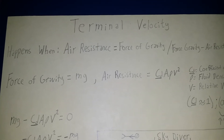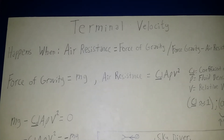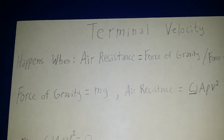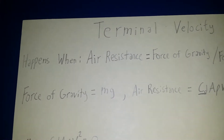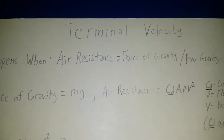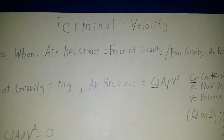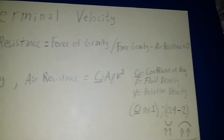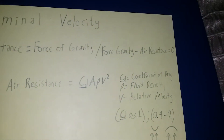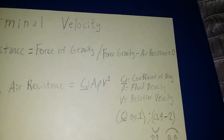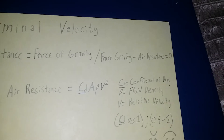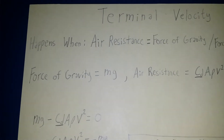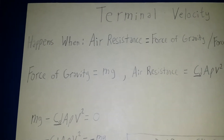This is about how to calculate terminal velocity. Terminal velocity happens when air resistance is equal to the force of gravity, or when the force of gravity minus the air resistance equals zero.